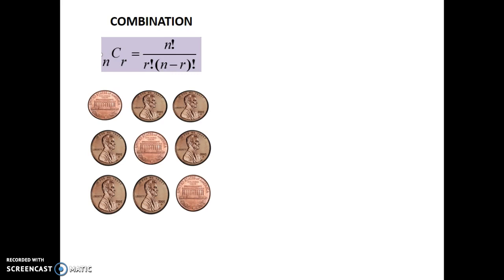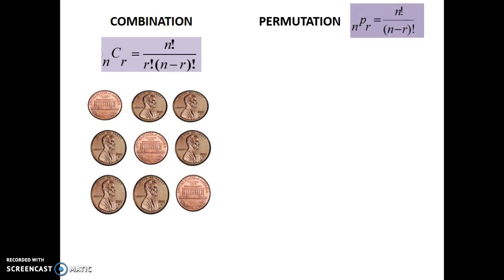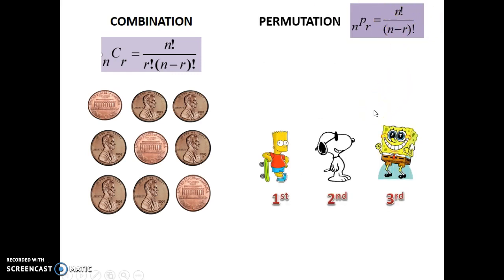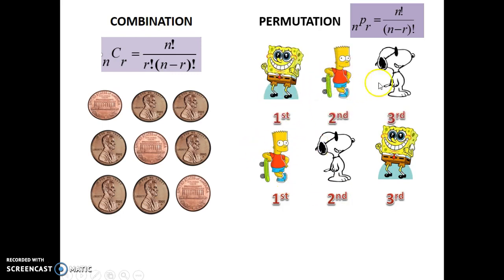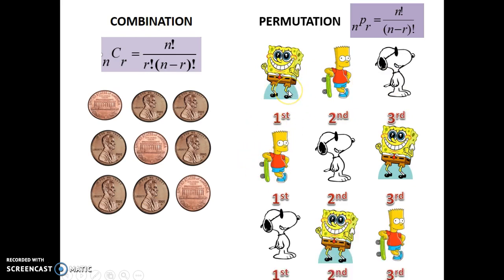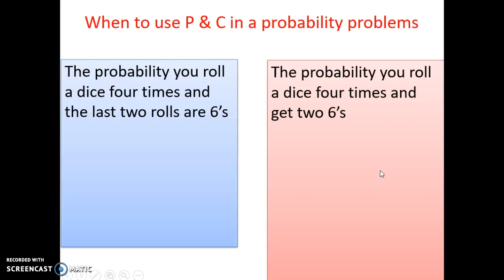Remember our combination equation - a combination is when you can arrange things in different ways but it doesn't really change the outcome. A permutation equation is a little bit different - in a permutation, the arrangement does make a difference. For example, if we're choosing our favorite cartoon characters, we really do care what order it's in - whether Spongebob or Bart is first, second, or third actually makes a difference.